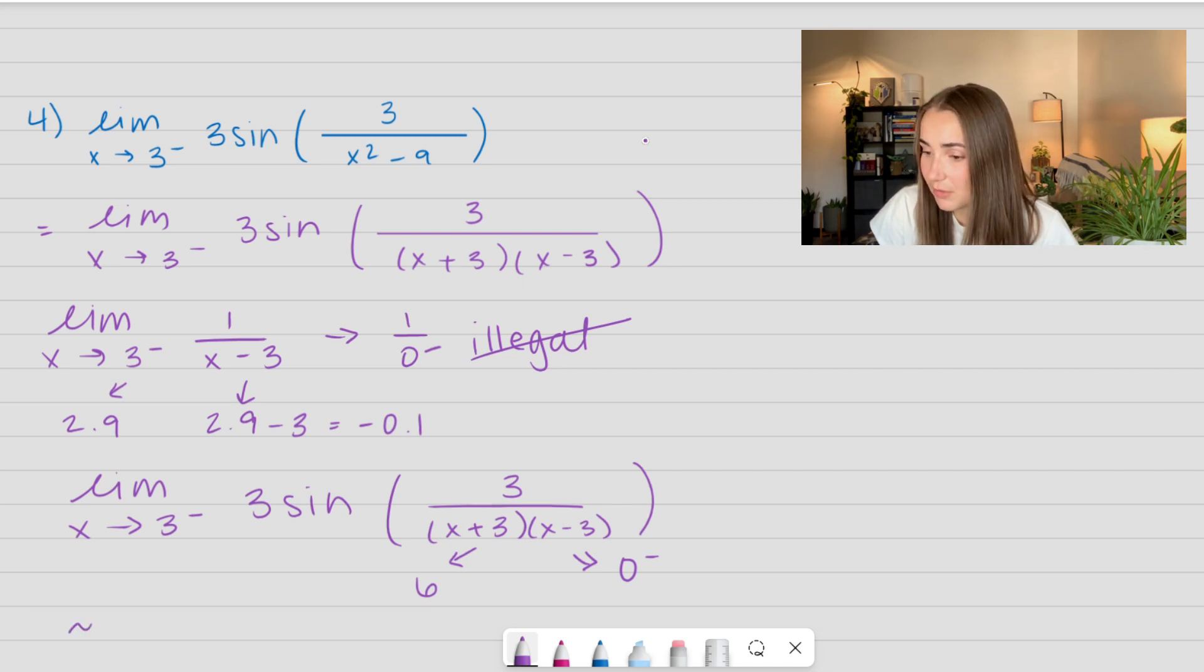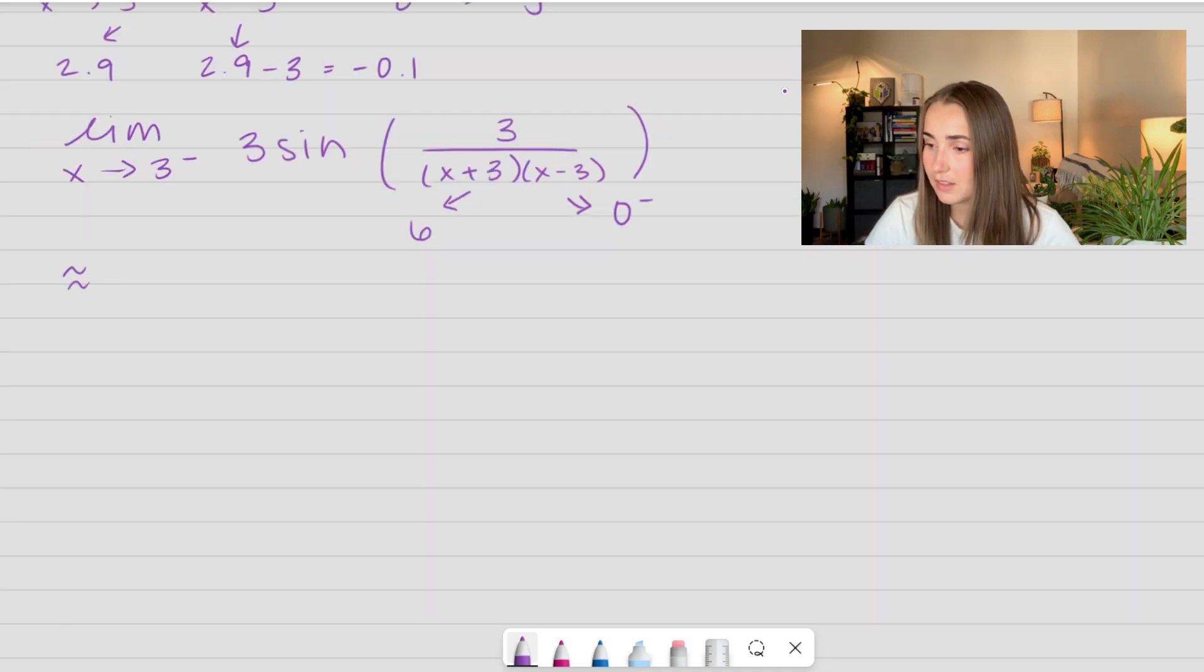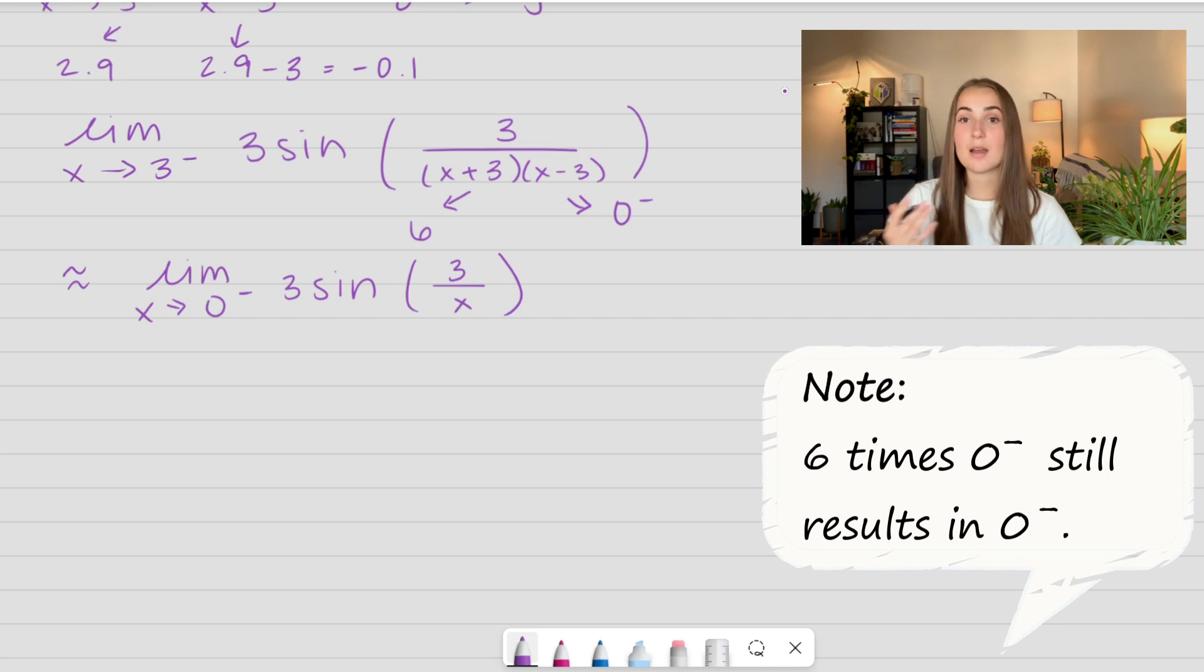And then the 3 in the numerator doesn't change at all. And so this is very similar, and I'm going to scroll down, to the limit as x approaches 0 from the left side of 3 times sine of 3 over x, right? Because that denominator is approaching 0 just from the negative side.